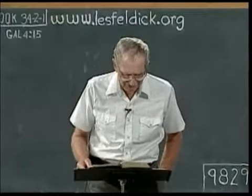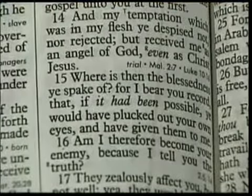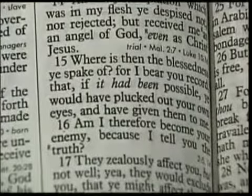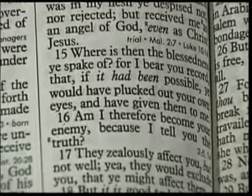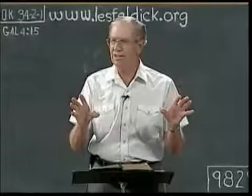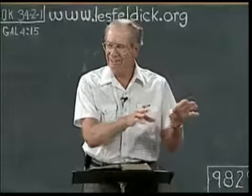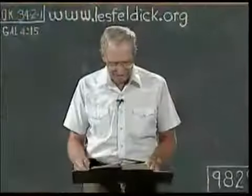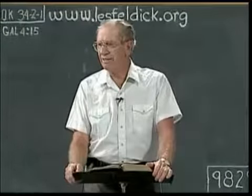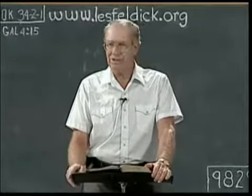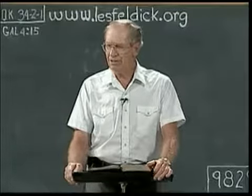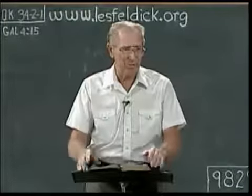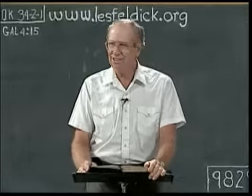Verse 15: "Where is then the blessedness you spoke of? For I bear you record that if it had been possible, you would have plucked out your own eyes and have given them to me." What was the man saying? There was such a bond of affection between these pagan Galatians who had come under Paul's gospel and the transforming power of it. They loved the man in spite of his physical inadequacies. He said it was in such a degree — and that's why I feel he had an eye problem — they would have given their healthy eyes to replace his sickly ones because they had such a love for him.